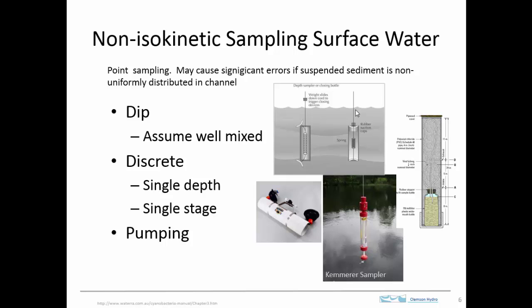Another way to sample surface water is the non-isokinetic method, which collects a sample at a particular point. A simple approach is the dip method — just filling a container from the surface, or submerging a container and opening it underwater while pointing it upstream. There are also devices specifically designed to enable point sampling at depth.